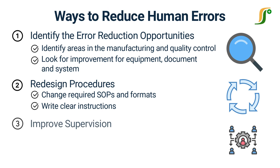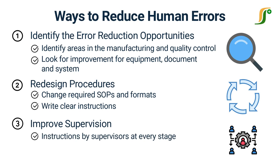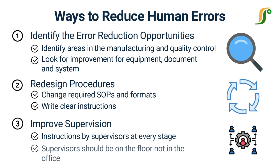Improve supervision. Instructions to the workers and pharmacists should be given at every stage of manufacturing by the supervisors. Before starting a specific job, working instructions should be given by the supervisor. Supervisors should be on the floor, not in the office.